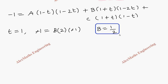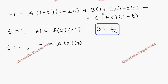In the same way, let's take t equal to minus 1. The equation becomes: minus 1 equals A into (1 minus minus 1) into (1 minus 2 times minus 1), which is A into 2 into 3, giving 6A. The B term becomes 0 and the C term also becomes 0. So the value of A is minus 1 by 6.